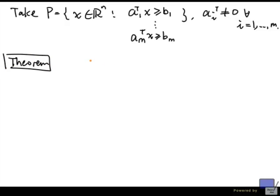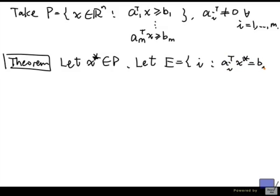It turns out that there is a theorem that gives a characterization. So let x star be in P, and let E denote the set of indices such that Ai transpose x star is equal to bi.